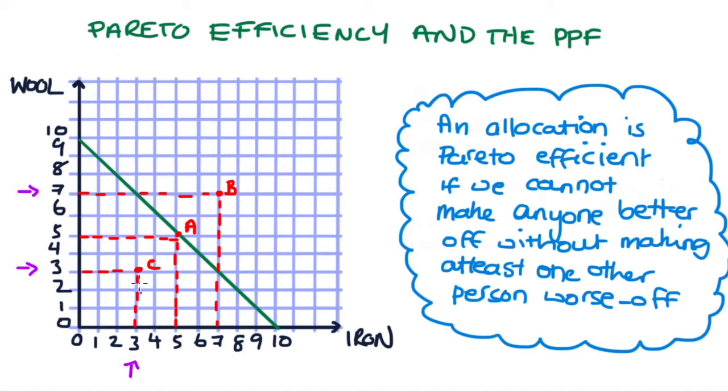Now at C we've got three tons of wool and three tons of iron, that's how much we're producing. And so we can increase to seven tons of wool because that's what we've decided to do and we get to point D.